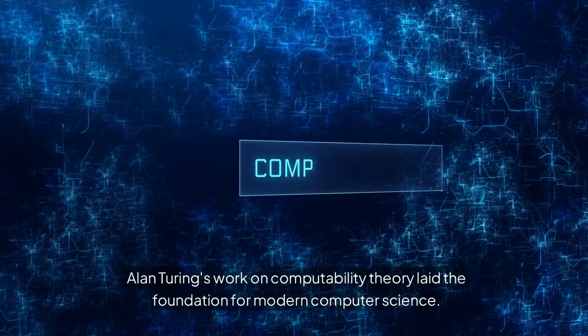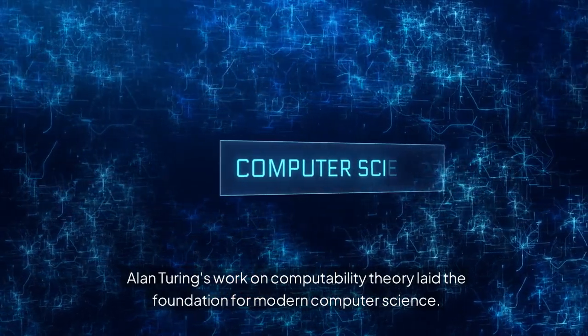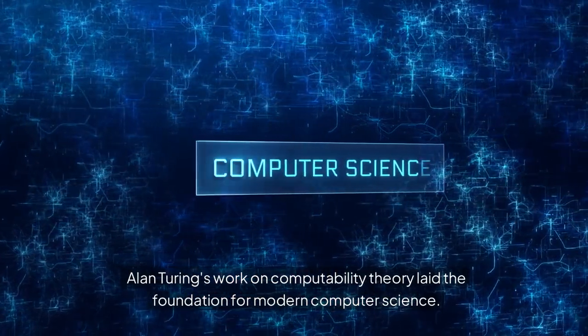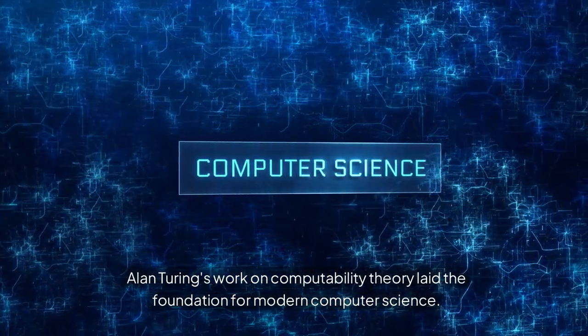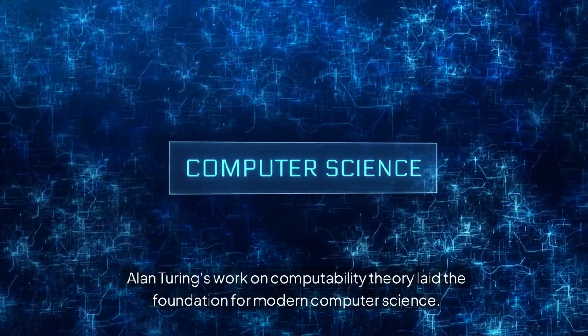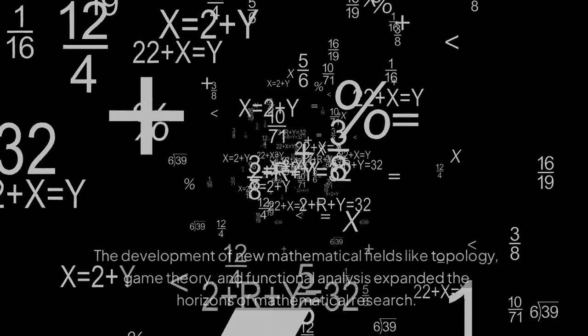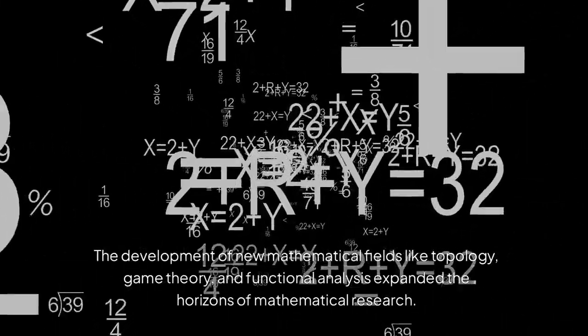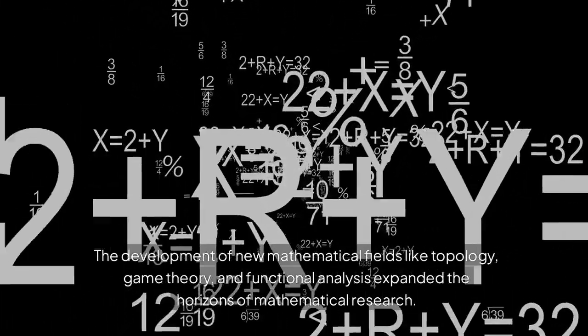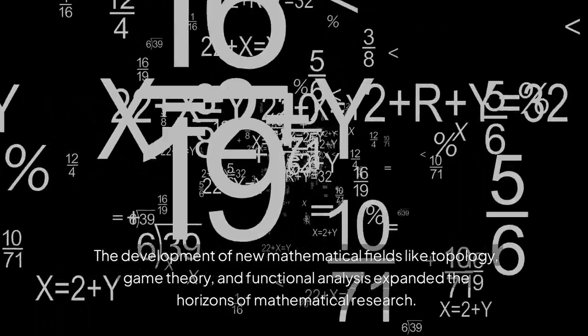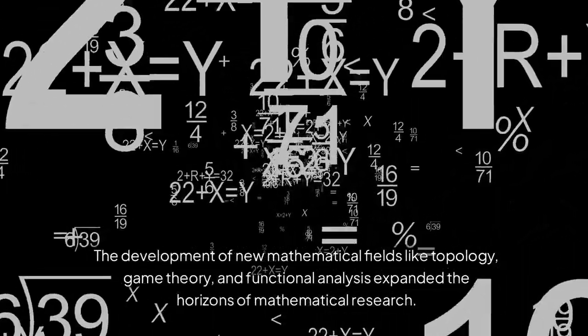Alan Turing's work on computability theory laid the foundation for modern computer science. The development of new mathematical fields like topology, game theory, and functional analysis expanded the horizons of mathematical research.